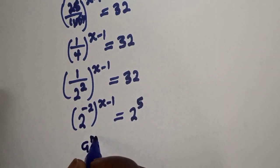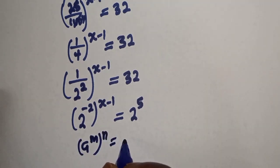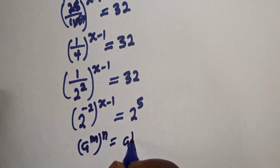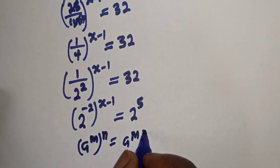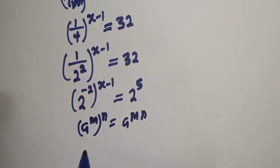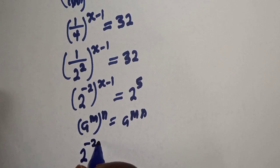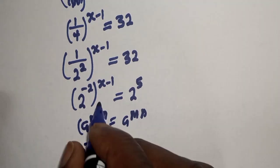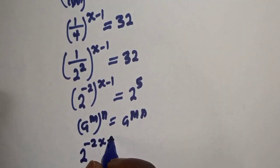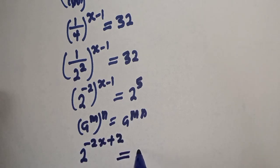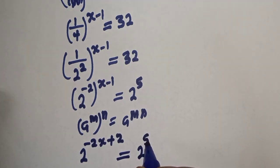Take note that if you have a raised to power m, to the power of n, it equals a raised to power m times n. Applying this rule, we get 2 raised to the power of minus 2 times (s minus 1), which gives minus 2s plus 2, is equal to 2 raised to the power 5.